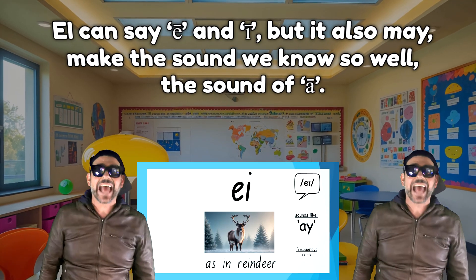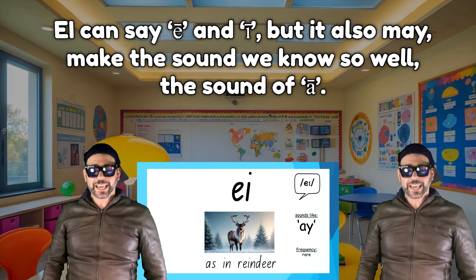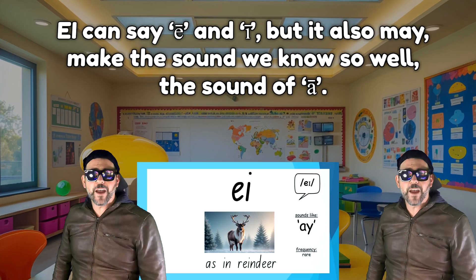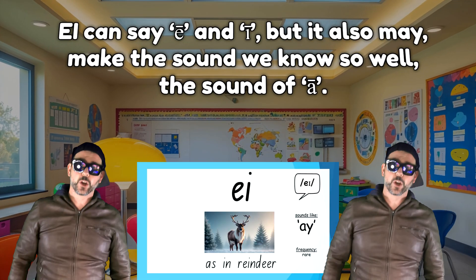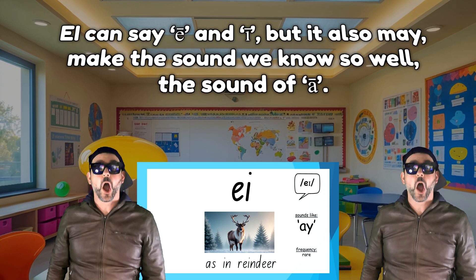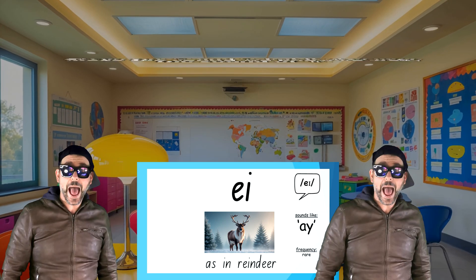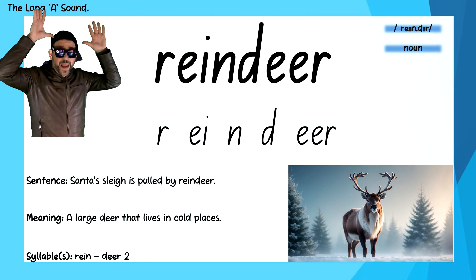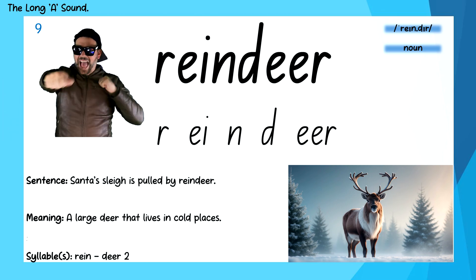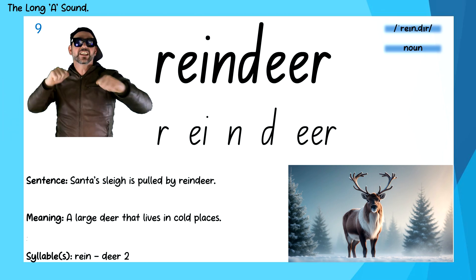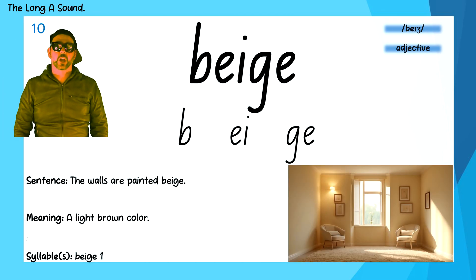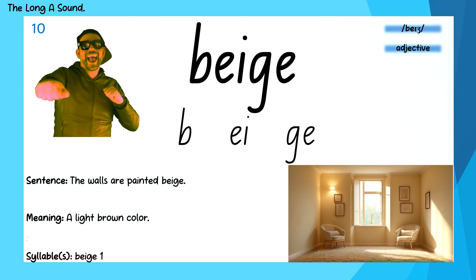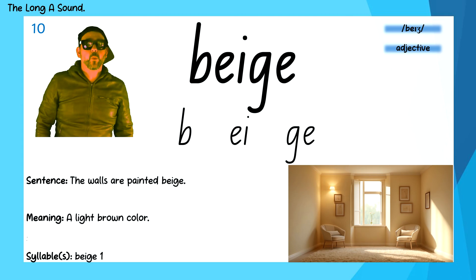E-I can say E and I, but it also may make the sound we know so well — the sound A. Reindeer — R-E-I-N-D-E-A-R. Beige — B-E-I-G-E.